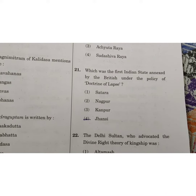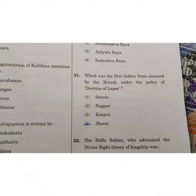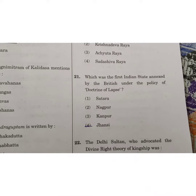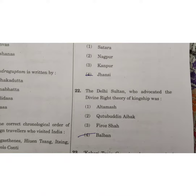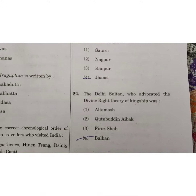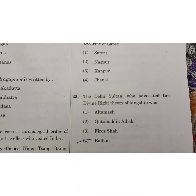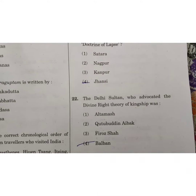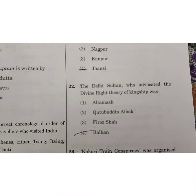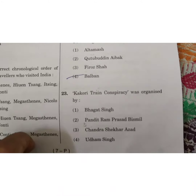Which was the first Indian state annexed by the British under the policy of Doctrine of Lapse? The correct answer is Jhansi. The Delhi Sultan who advocated the divine right theory of kingship — the correct answer is Balban.